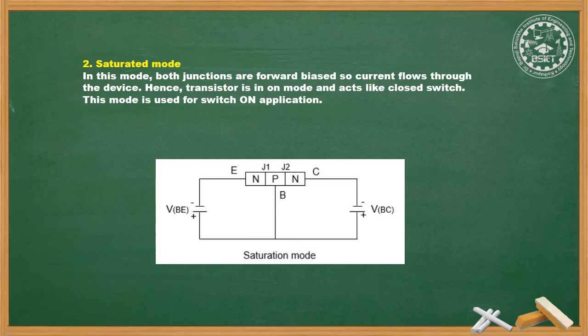The second mode is saturated mode. In this mode, both junctions are forward biased, so current flows through the device. Hence the transistor is in ON mode and acts like a closed switch. This mode is used for switch-on applications. You can observe in the diagram that both the transistor junctions are forward biased.